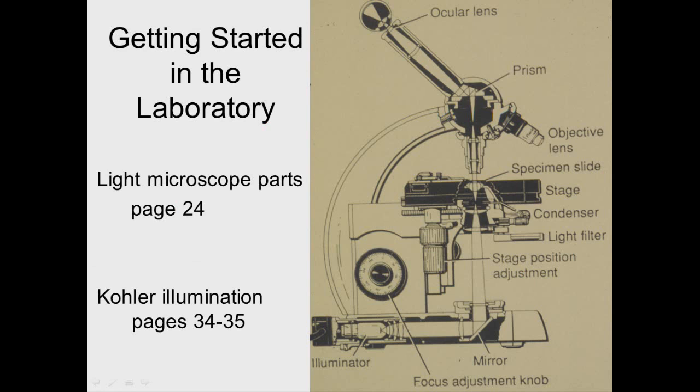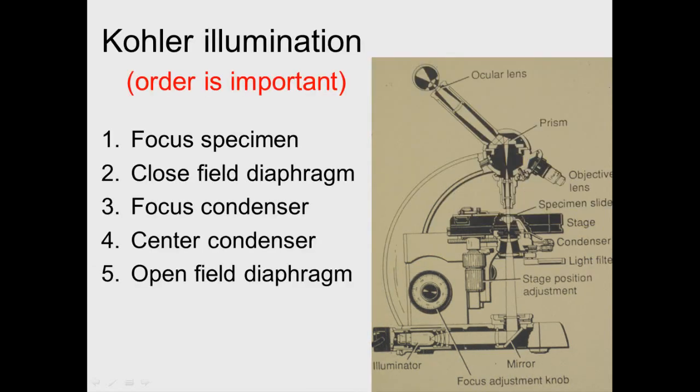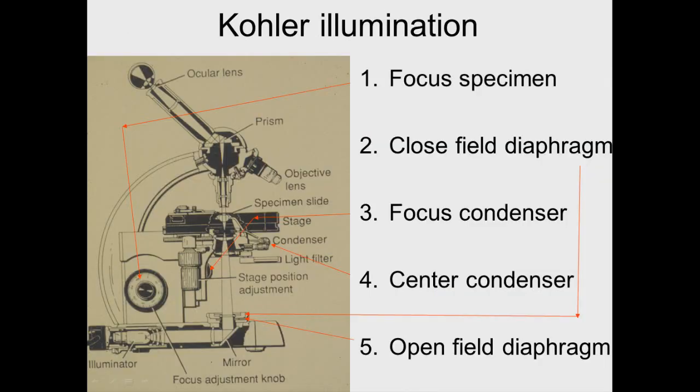Now getting started with microscopy, remember about Kohler illumination. There's five basic steps in Kohler illumination. The first thing you do is focus the specimen. Then you close the field diaphragm. Then you focus the condenser. You center the condenser, and then you open the field diaphragm again. So those are the different components of it.